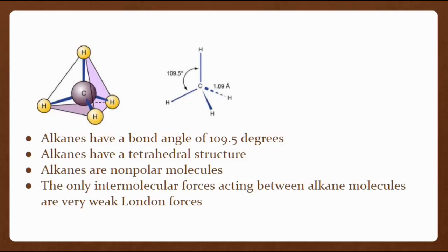The lower molecular mass alkanes, 1 to 4 carbons, are gases at room temperature. Those having 5 to 20 carbons tend to be liquids with increasingly high boiling points, and those with more than 20 carbons are increasingly viscous liquids and finally waxy solids at room temperature. The low molecular mass alkanes from 1 to 4 carbons are frequently used as cooking fuels. Molecules of intermediate length, 6 to 12 carbons, are found in gasoline and diesel fuels.